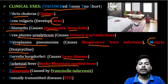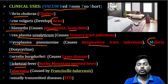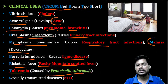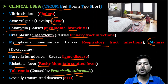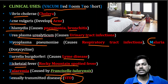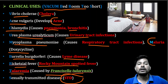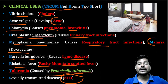Tetracycline is useful in the treatment of tularemia, caused by Francisella tularensis. Tetracycline also helps in the treatment of sexually transmitted diseases. These are the clinical uses of tetracyclines along with their causative organisms.